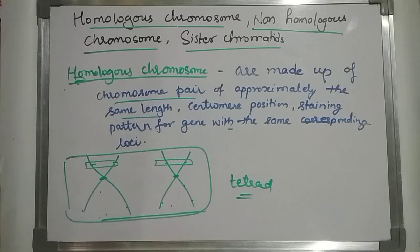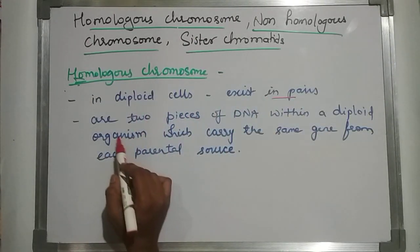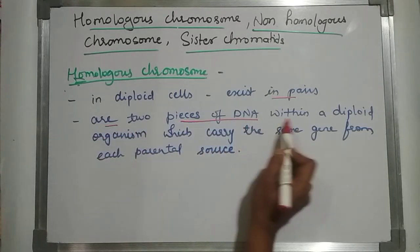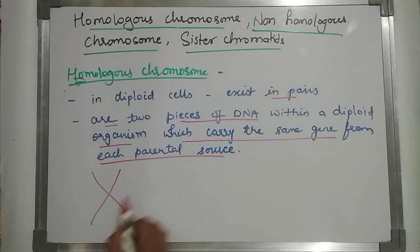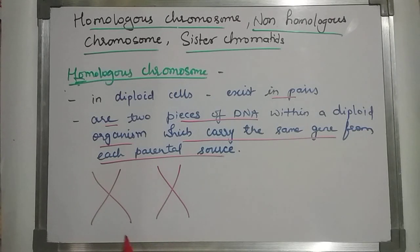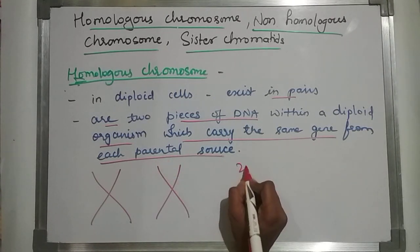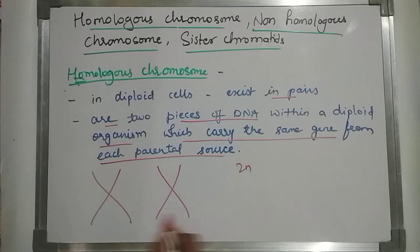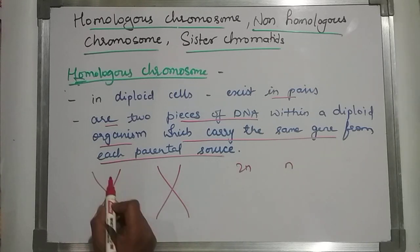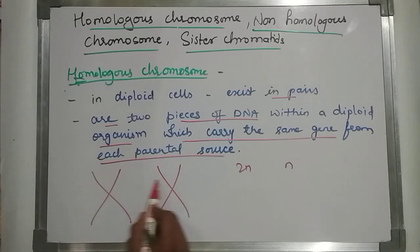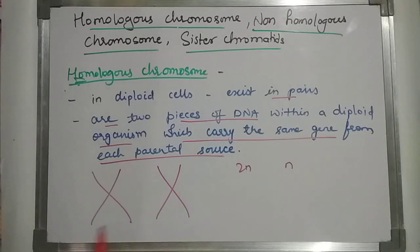Diploid cells exist in pairs. There are two pieces of DNA within a diploid organism which carry the same gene from each parental source. These are the homologous chromosomes in a diploid cell. In a haploid cell, only one chromosome is present; in a diploid cell, two chromosomes are present carrying the same gene from each parental source.